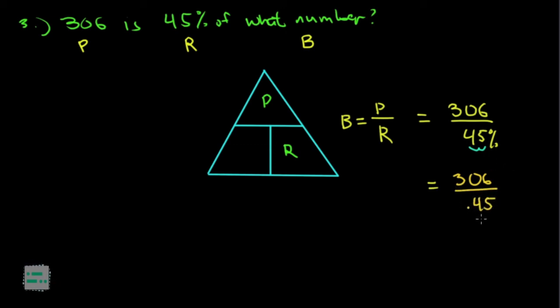306 divided by 0.45. Now you can divide. Again, you may use your calculator to save time or you can do this manually. But to save time, I'll use the calculator and I know that the answer to this problem is actually 680. So 306 is 45% of 680.